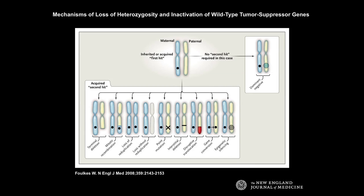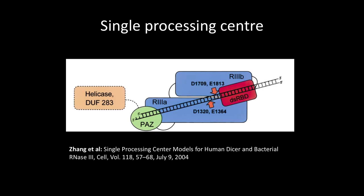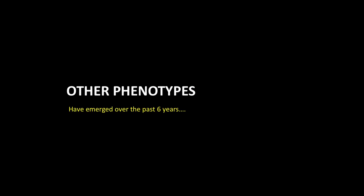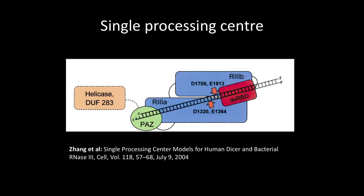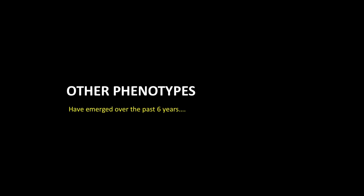If 20% of all mutations occur at one position, it's an oncogene; if scattered across the gene, it's a tumor suppressor. So on one hand it's an oncogene, on the other a tumor suppressor. It was already known that this processing center — the 3B and 3A domains — was important for creating mature microRNAs even before the gene was known to cause cancer. The phenotypes I'll talk about now are those involved in endocrinology: pituitary blastoma, MNG, differentiated thyroid cancer, and ovarian sex cord stromal tumors.